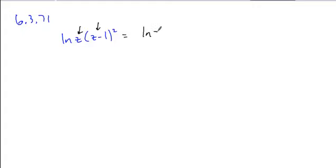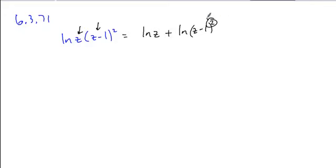So we have ln of z plus ln of (z minus 1) quantity squared. We finish up by taking the power inside the log and moving it to the front as a multiplier. The two gets moved in front and we get our completely expanded form.